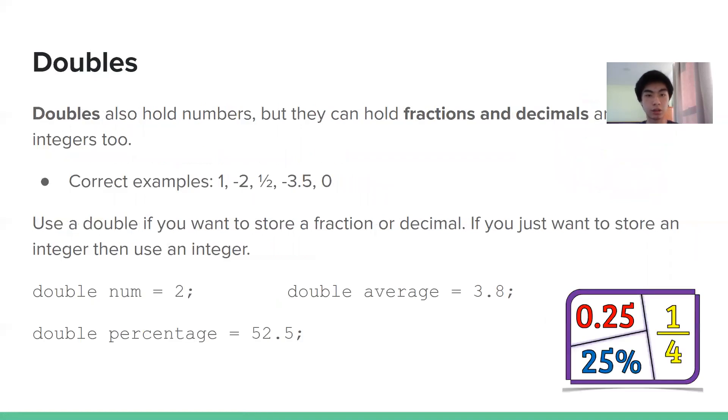So now doubles are how we store fractions and decimals. So one half would be correct, negative 3.5 is correct. Also, you can store zero just like with ints. But the thing, the interesting thing here is one and negative two, because those are whole numbers. So you may think they couldn't be stored in doubles. You may think you'd have to use an int. But Java would just see one as 1.0 if you store it in a double. So that's why it still works.